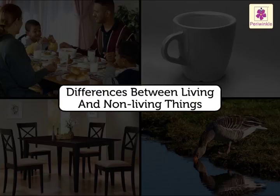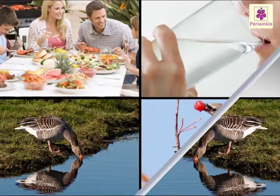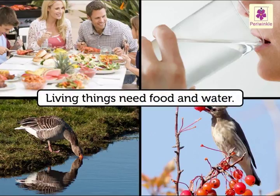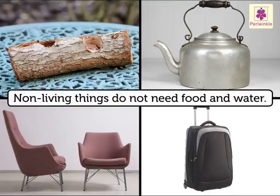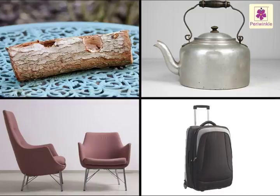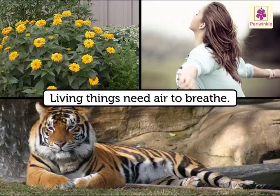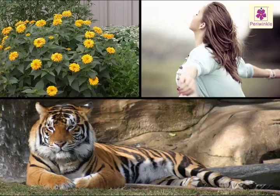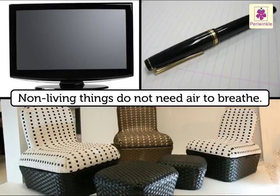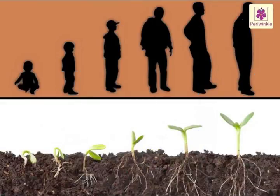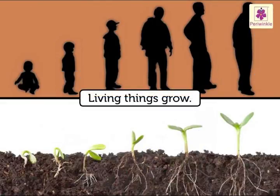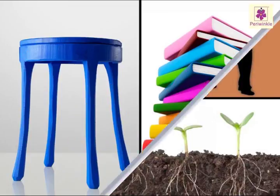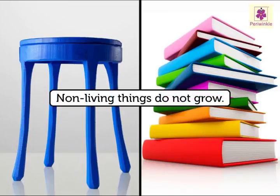Differences between living and non-living things. Living things need food and water, while non-living things do not need food and water. Living things need air to breathe, but non-living things do not need air to breathe. Living things grow, and non-living things do not grow.